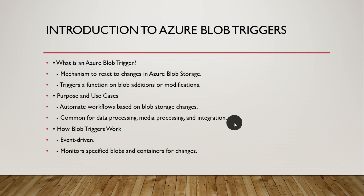Let's get started. First, we'll understand what is a Blob Trigger. Basically, it's a mechanism to react to changes in Azure Blob Storage. For example, whenever a file gets uploaded to Azure Blob Storage, you want to trigger a function — in that case we use a Blob Trigger. The Blob Trigger will trigger a function when any file gets uploaded to that particular Azure Blob Storage.